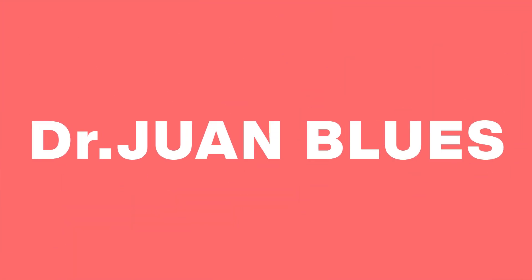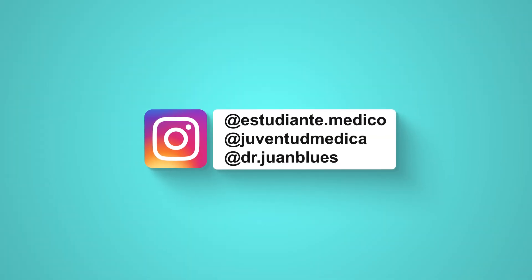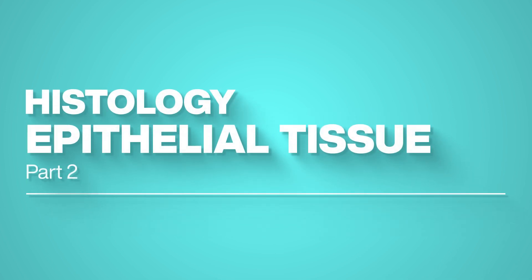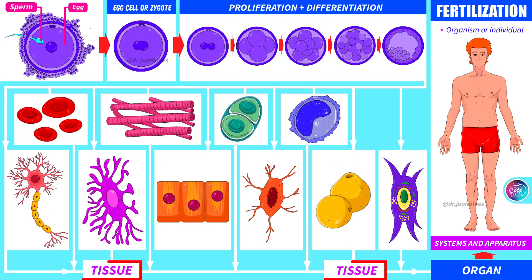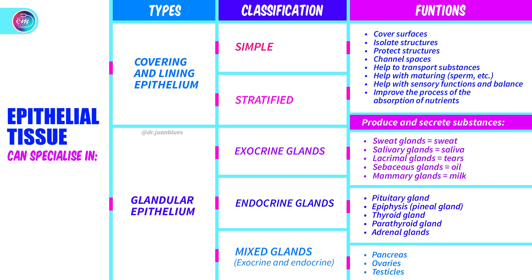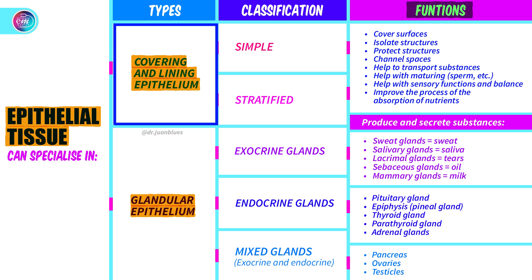Hello my friends. This video is the English version of the lesson taught by Dr. Juan Blues. This is the second part of the histology lesson on epithelial tissue. Above is the link to the first video. In the previous video, we gave the definition of tissue, looked at the different sorts of epithelial tissue — lining epithelium and glandular epithelium — explored their most important characteristics and defined their principal functions. Now we are going to explore epithelial lining tissue in greater depth.